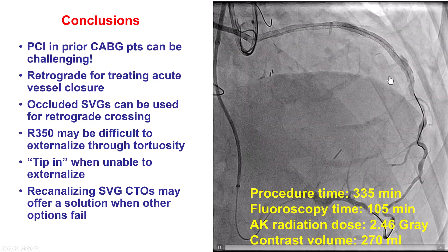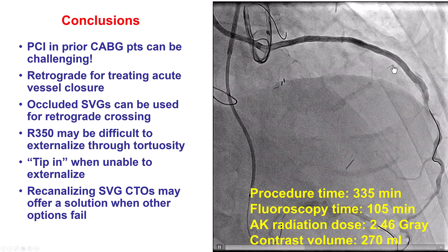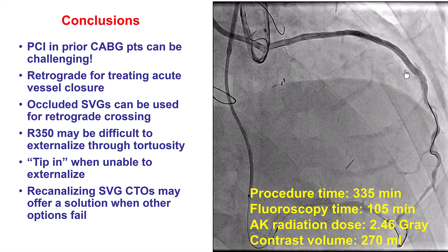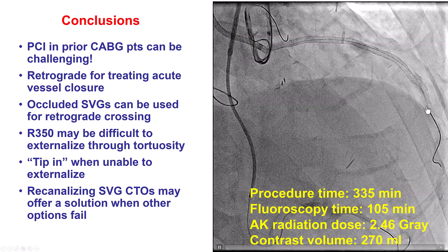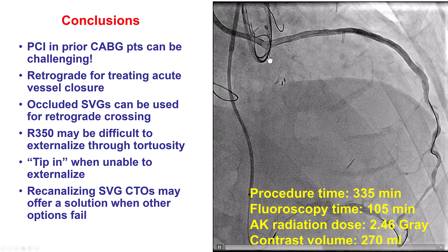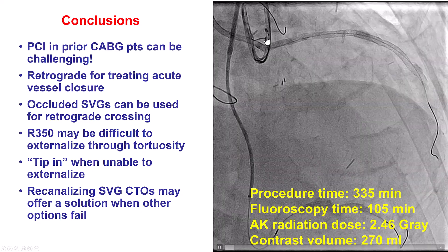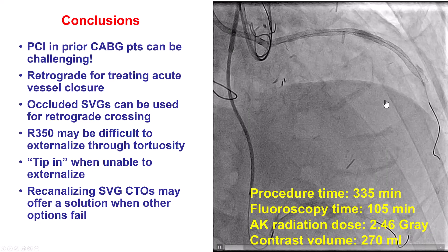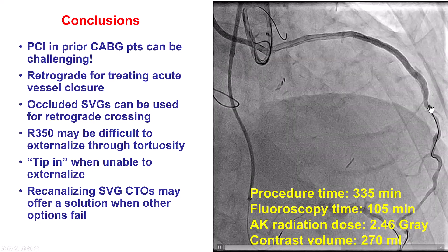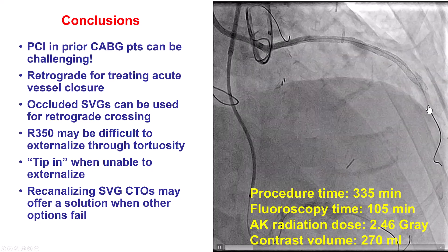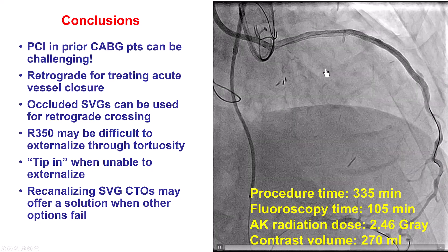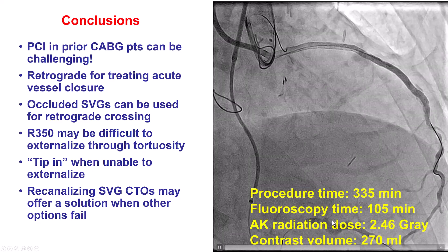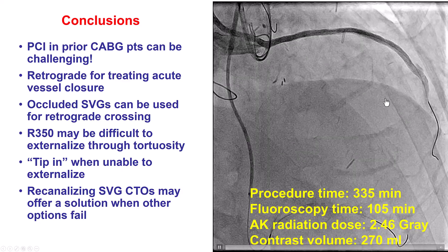We also had a perforation at the distal cap in a patient with previous coronary bypass. Fortunately, the perforation sealed without requiring additional treatment, which would have been very challenging given limited vessel access. Finally, the compromise here was that instead of stenting the LAD as planned, we ended up stenting the saphenous vein graft — not the most durable option. However, given the failure to recanalize the LAD, we thought this could provide the patient symptomatic relief and was better than not doing it. In summary: multiple challenges, two complications — acute vessel closure and perforation — both successfully treated: the acute vessel closure with retrograde crossing, and the perforation with watchful waiting.